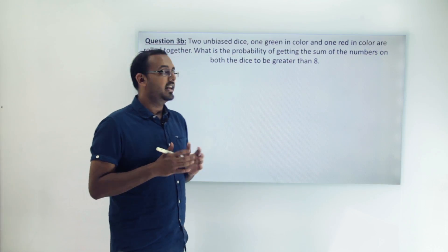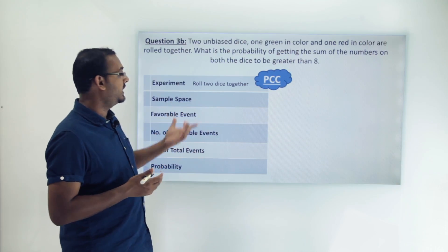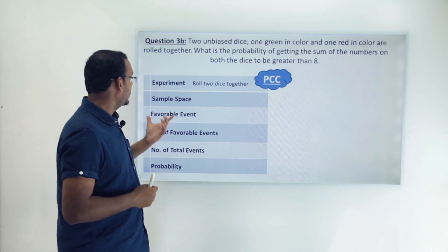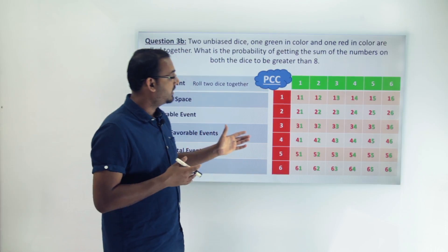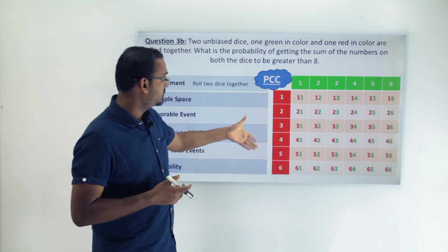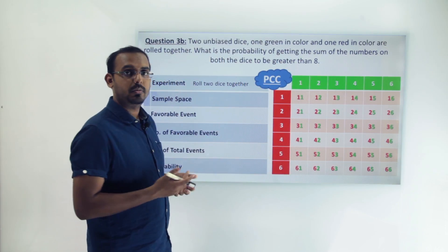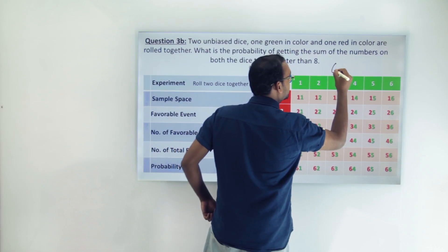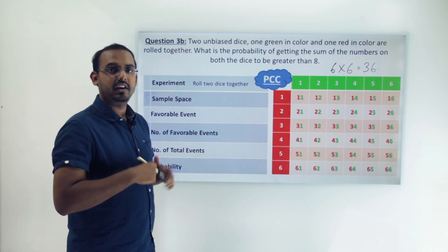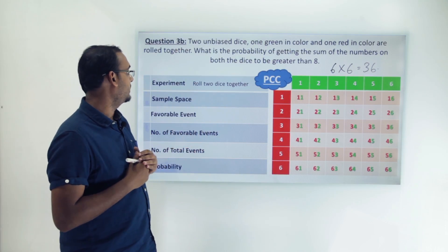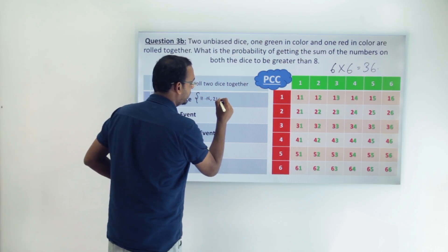Let's create the PCC and analyze this problem. The experiment is the same: we are rolling two dice together. The sample space is also the same as we calculated before — (1,1), (1,2), ..., (6,6) — with a total of 36 different outcomes. So there is no need to recalculate it; we use the same table.